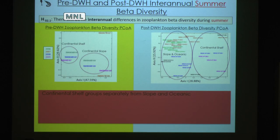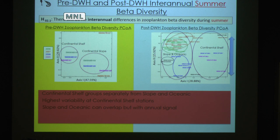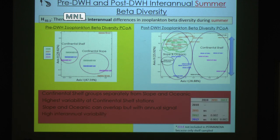For the summer zooplankton communities, we again see a really strong sub-regional grouping: continental shelf groups separately from slope and oceanic — the shelf being the sub-region interacting most with river water and having the highest variability. Slope and oceanic can differ but also overlap, and even with overlap there's a strong annual signal at slope and oceanic stations. Based on pairwise testing, there was high inter-annual variability of zooplankton communities in summer. Importantly, 2010 was not significantly different from any other year — and that was the spill year. So if the oil spill had a really big signal on zooplankton, we would have expected to see it, and we didn't.